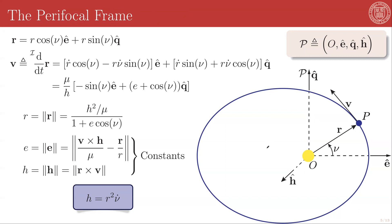This means that we can define a useful reference frame called the parafocal frame, whose third unit direction is h-hat, whose first unit direction is the direction of the eccentricity vector — the constant of integration that we found in our derivation — and whose second direction we will call q-hat, which simply completes the triad of e-hat, q-hat, h-hat, such that e-hat crossed with q-hat equals h-hat.